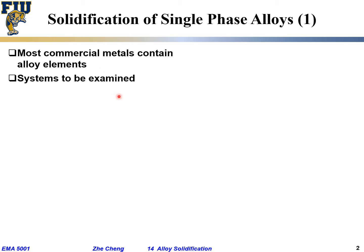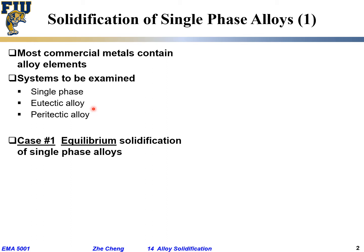In this lecture we're going to cover several systems. One would be single phase — going from liquid to solid, single phase. We're also going to cover the so-called eutectic alloy, where the composition is at the eutectic composition, corresponding to the lowest melting point. And then the peritectic alloy, which is slightly away from the eutectic composition. We'll cover them gradually, starting with the simplest: the equilibrium solidification of a single phase alloy.